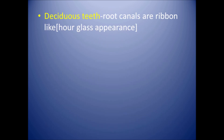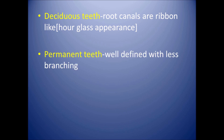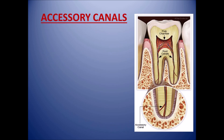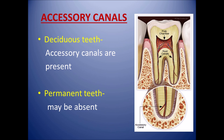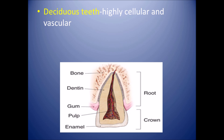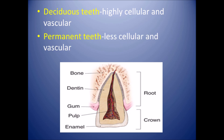In deciduous teeth, root canals are ribbon-like with an hourglass appearance, as compared to permanent teeth where root canals are well defined with less branching. Deciduous teeth have accessory canals which may vary in number, but these accessory canals are absent in permanent teeth. Deciduous teeth are also highly cellular and vascular as compared to permanent teeth.